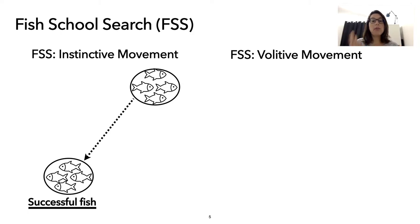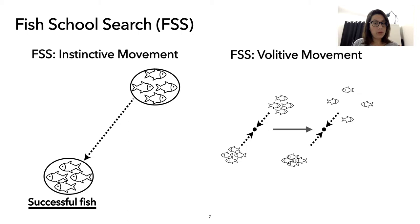The second movement is called volative. In this movement, the fish is attracted to the center of the mass of all the fish, and this movement allows the swarm to expand and to contract, depending on how successful the entire swarm is over iterations.